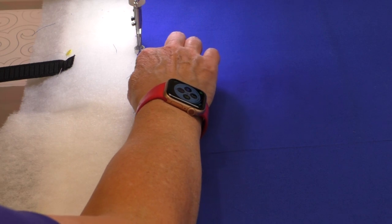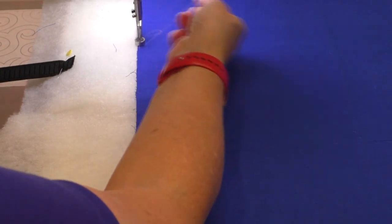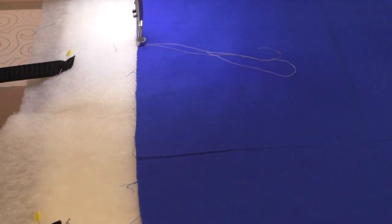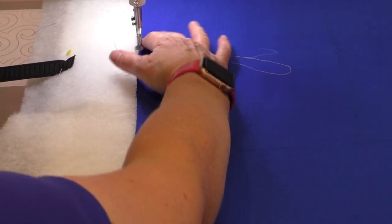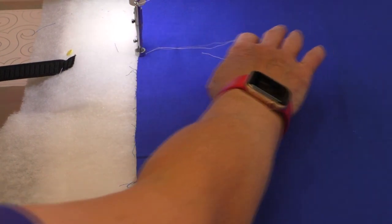I'll use that needle up and down button to bring my bobbin thread up to the surface of the quilt again. See if I can make sure that my hand stays out of the way. There we go. And I'll take one or two small stitches with that needle up and down button just to secure my beginning tail so they don't come undone.